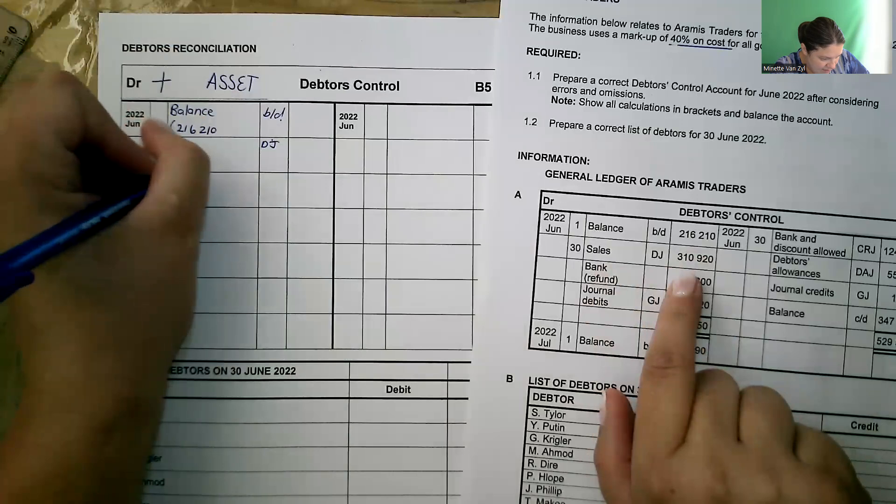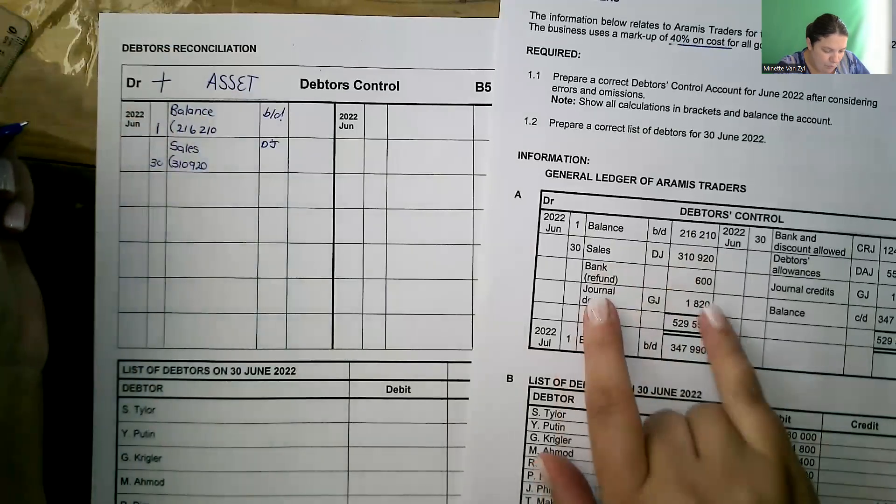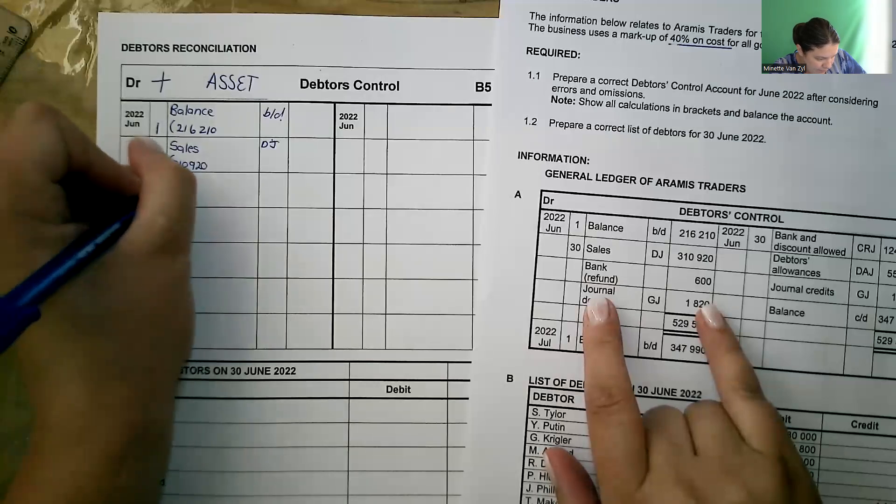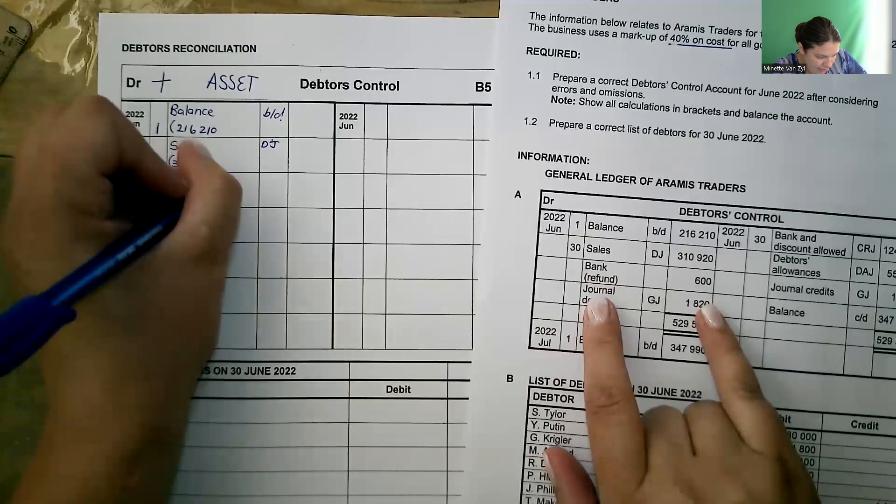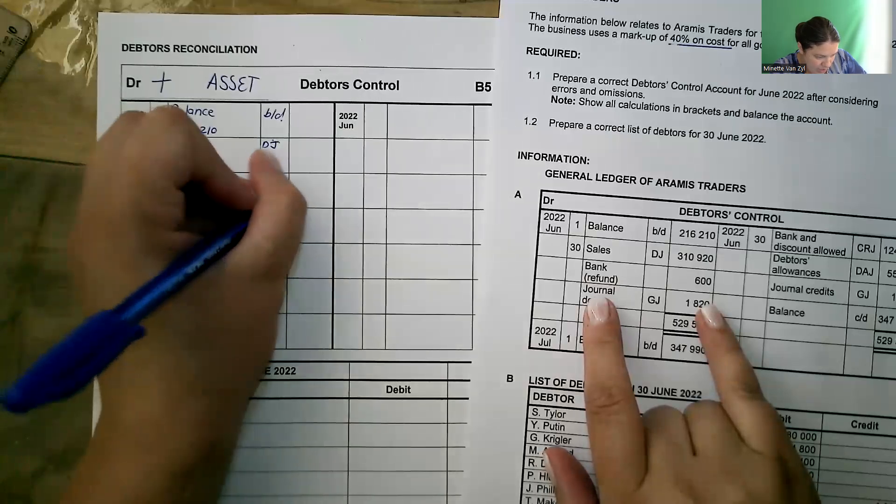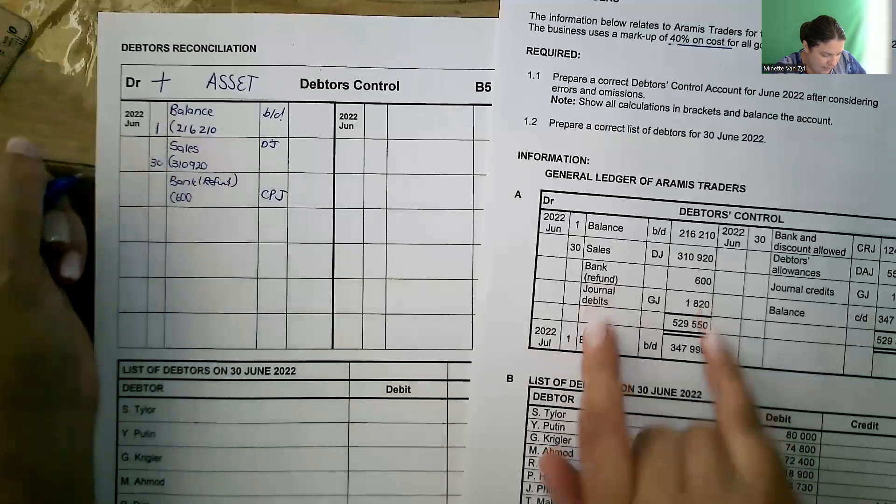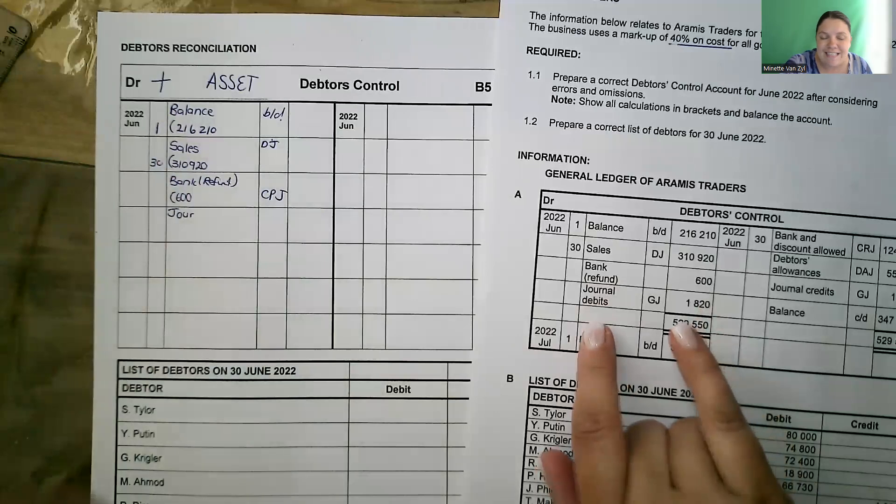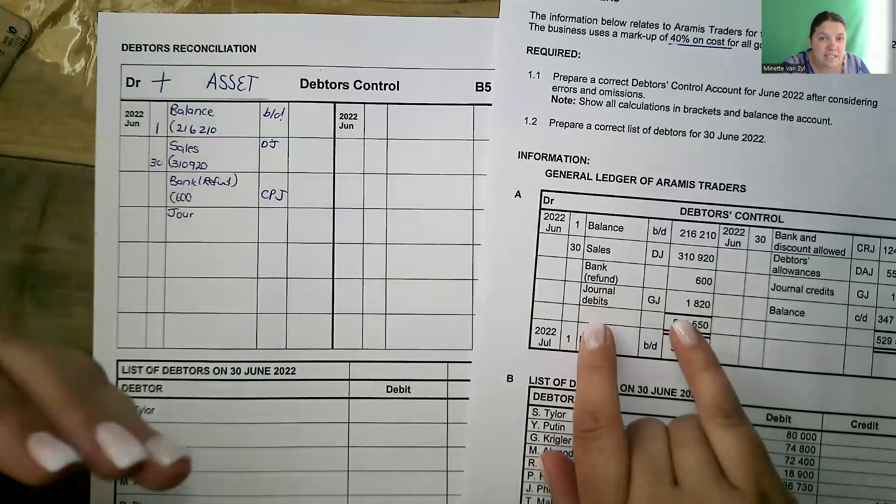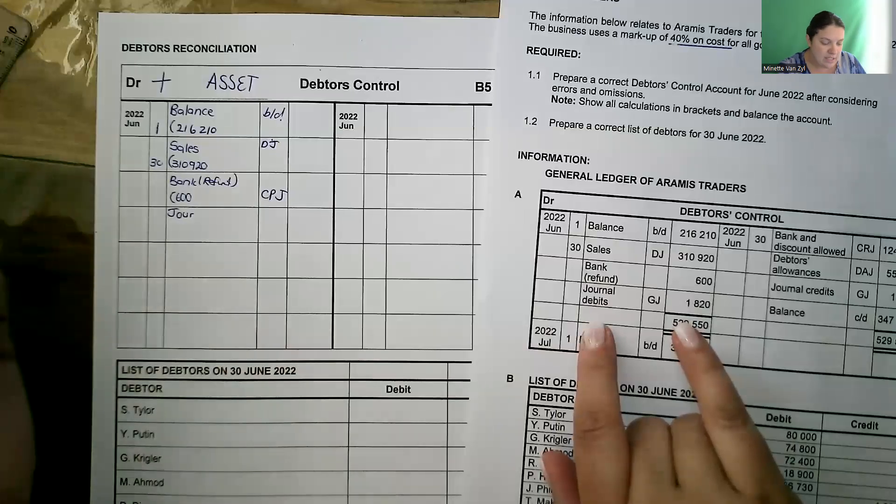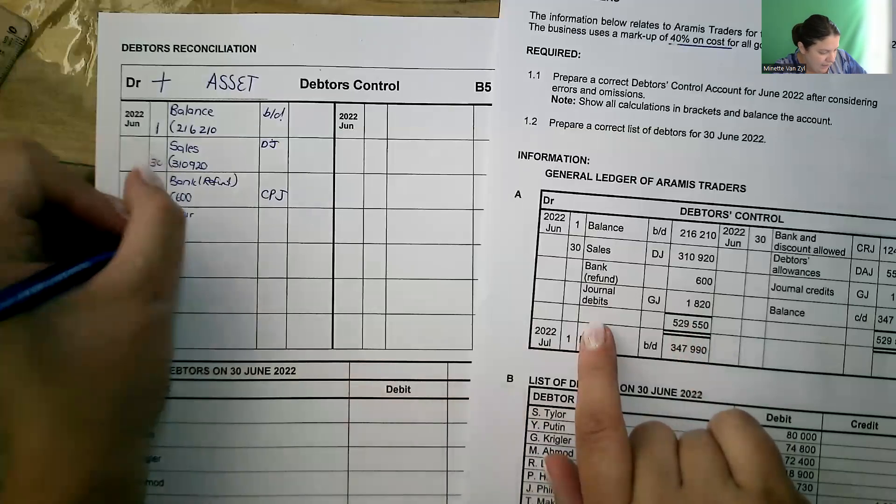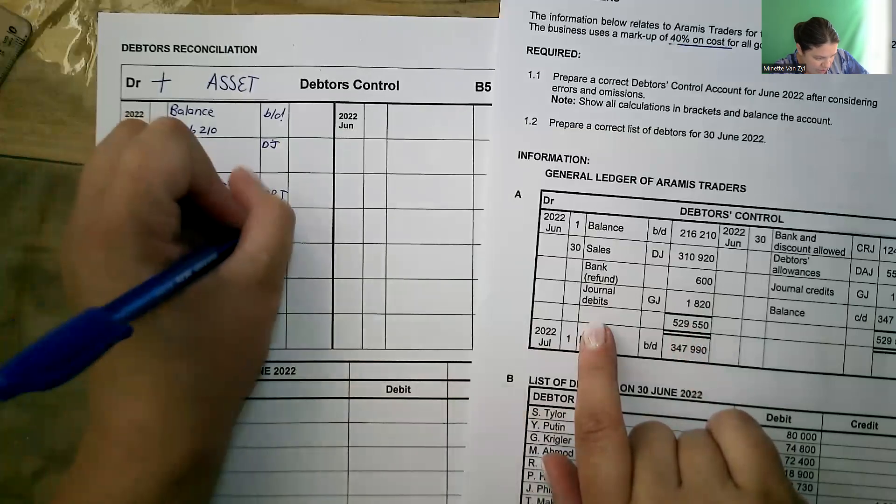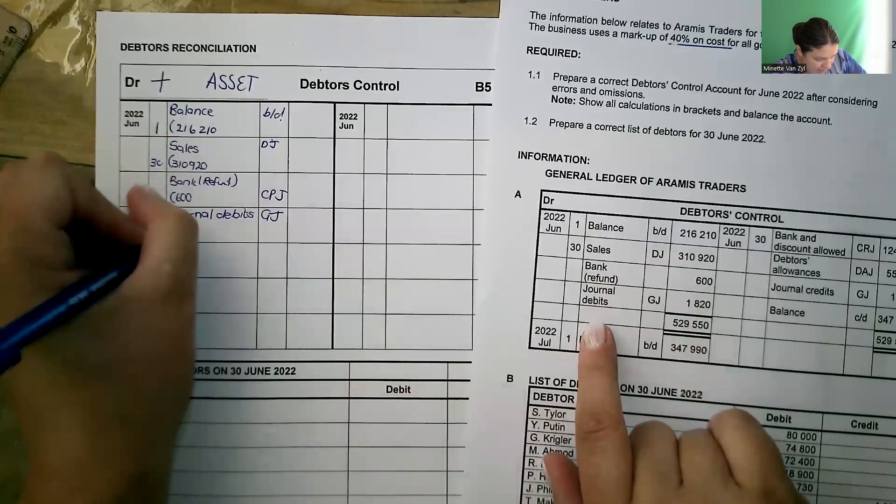Then there's a refund from the bank. Refunds are done through the CPJ. So it's bank refund, CPJ. Let's open the brackets. 600. Then we have journal debits. So this is if we increase a debtors control account with interest on overdue debtors, or we are correcting errors, or even transferring to a creditors account. Journal debits from the general journal. Open a bracket. 1,820.